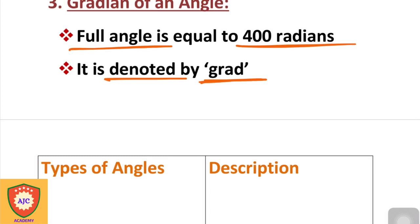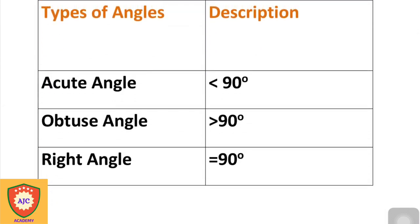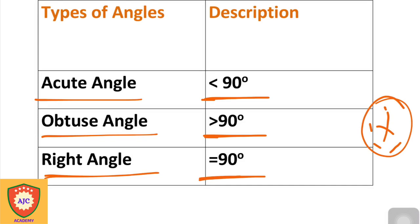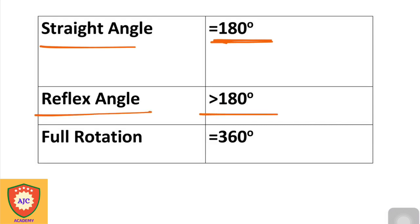Here are the important summary points: acute angle is less than 90 degrees; obtuse angle is greater than 90 degrees; right angle is equal to 90 degrees; straight angle is equal to 180 degrees; reflex angle is greater than 180 degrees; full rotation is equal to 360 degrees.